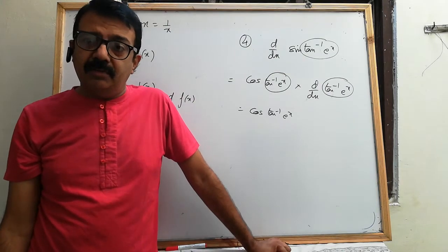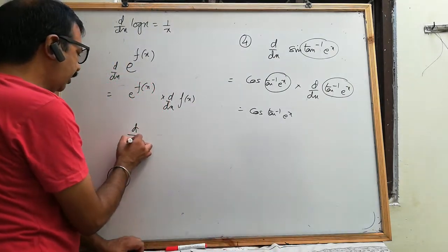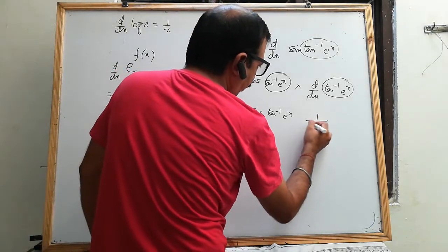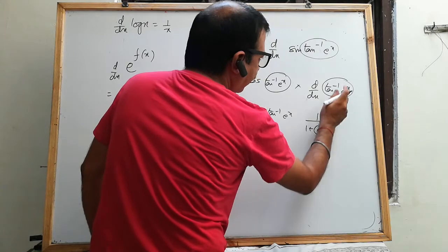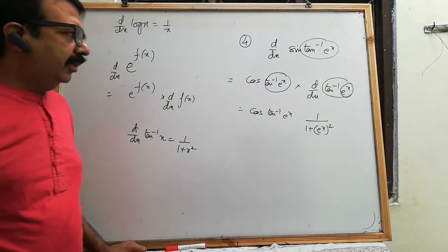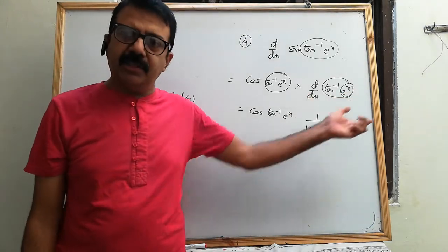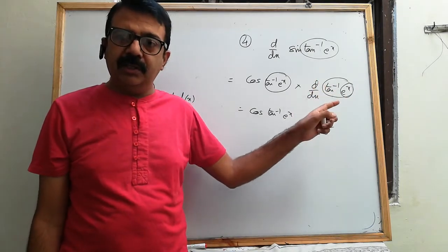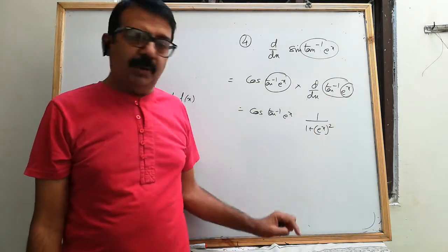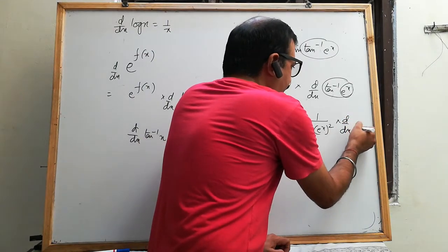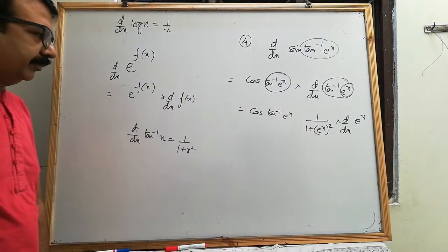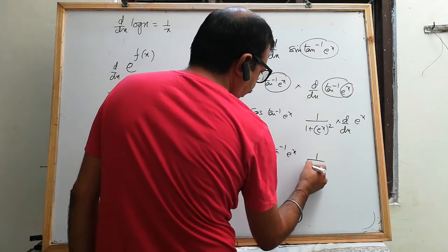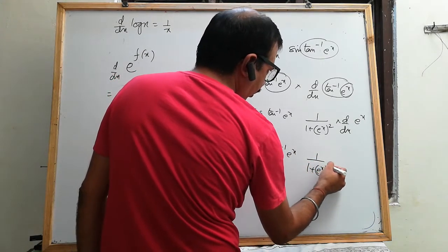tan inverse का derivative: 1 upon (1 plus x square)। यहाँ x की जगह e to the power of x है, तो tan inverse e to the power of x का derivative: 1 upon (1 plus e^x whole square)। फिर e to the power of x से multiply करो। Final answer: cos(tan inverse e^x) into 1/(1 + e^(2x)) into e^x.